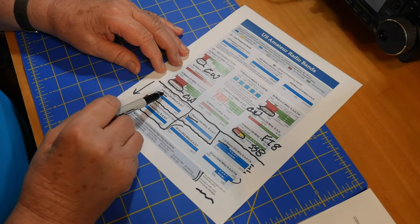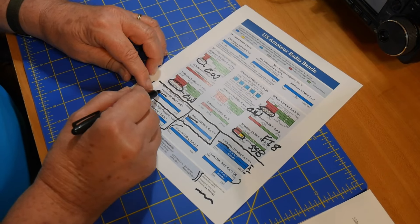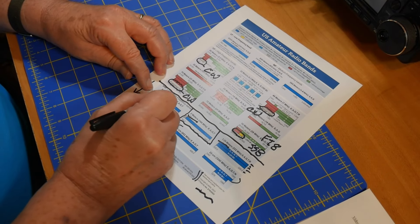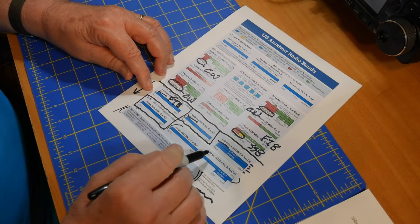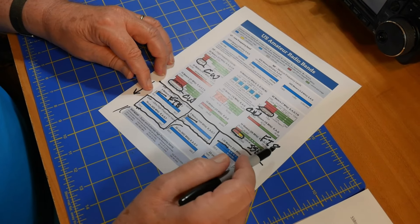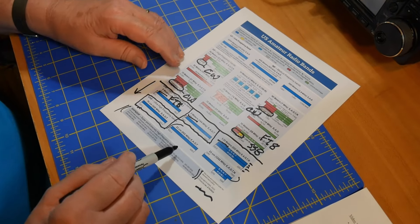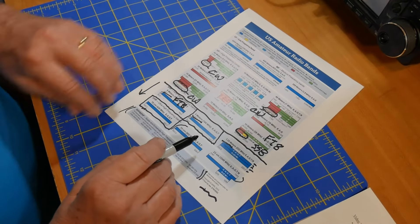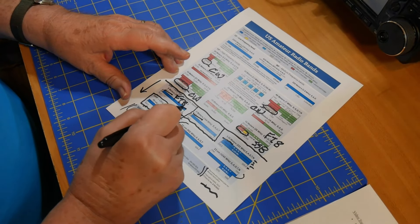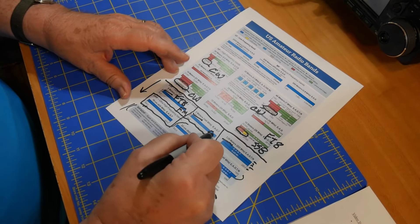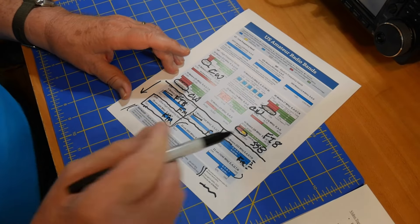Now, 6 meters is very interesting because since you can do all things here, CW up until 50.1, but FT8, this is a great band for FT8. And when the bands are open as they are frequently these days, you can operate FT8. Now, we'll talk about equipment in a little bit, but I just want you to note that you have FM privileges here, here, here, here, and on.